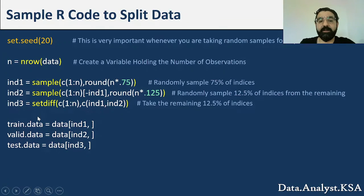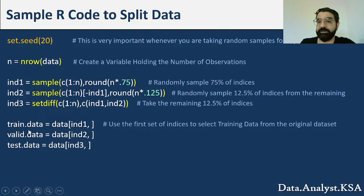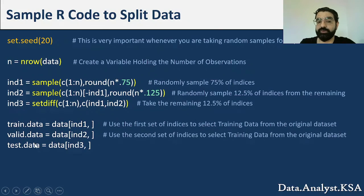And finally we just take subsets. For the train data is data and you're choosing the rows with index 1. Here you're choosing the rows with index 2 for your validation data, and for your testing data you're choosing the rows with index 3.